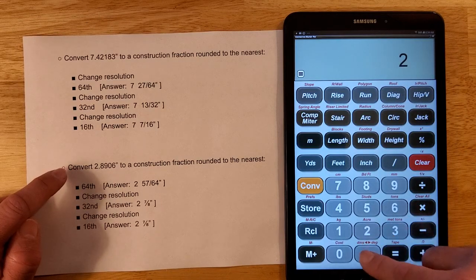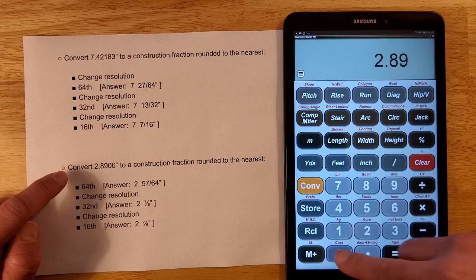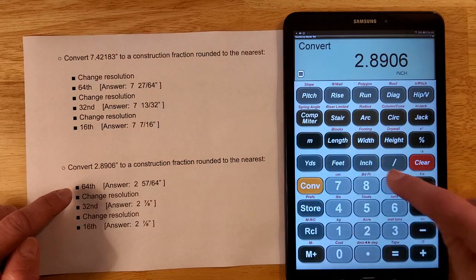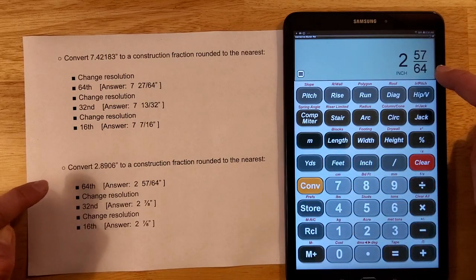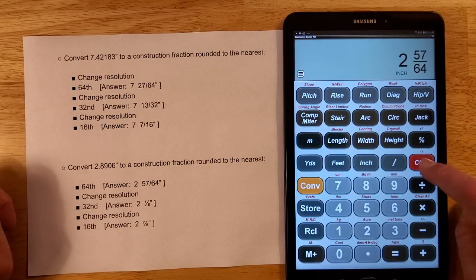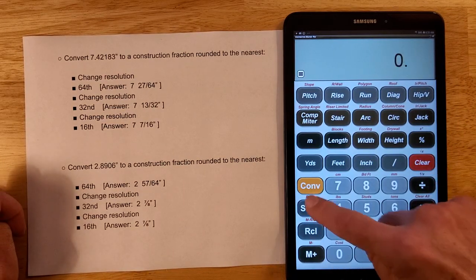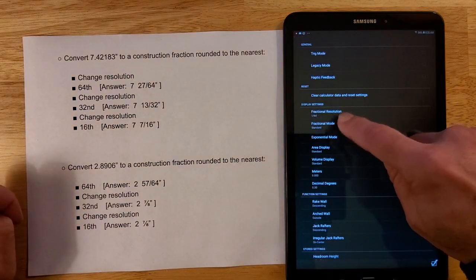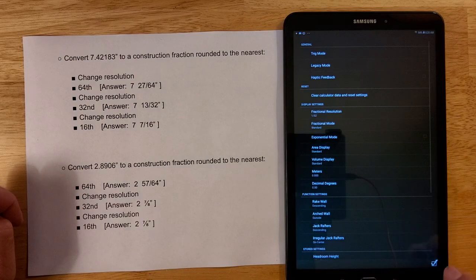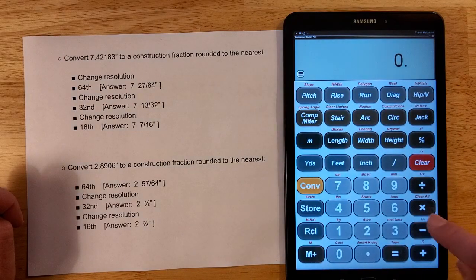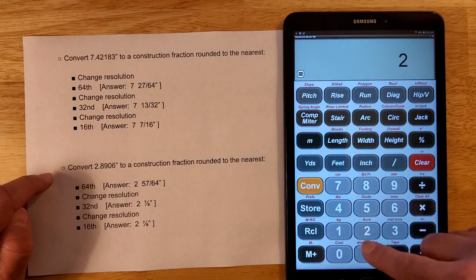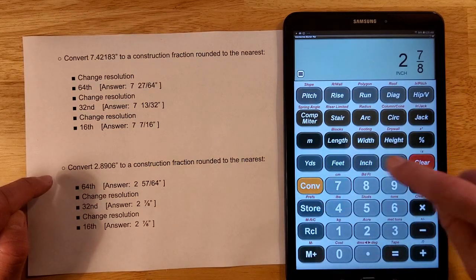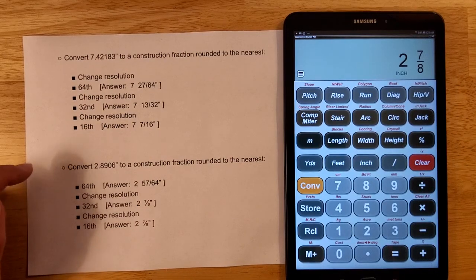So I'm going to do this one 2.8906 inches. I'm going to convert inches. And you see to the sixty-fourths I get two and fifty-seven sixty-fourths. Now I'm going to go back and change my fraction resolution to thirty-seconds. Do the same thing. 2.8906 inches. Convert inches. And I get two and seven-eighths.